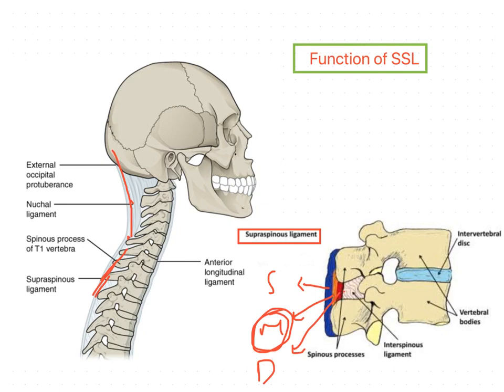The deep layer of the supraspinous ligament is reinforced or strengthened by the fibers of the multifidus muscle. This deep layer also attaches with the interspinous ligament.